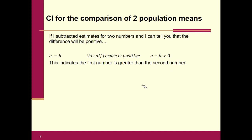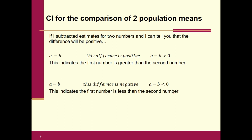If the difference A minus B turns out to be positive, that indicates the first number is greater than the second. Conversely, if the difference turns out to be negative — less than zero — that indicates that the first number A has to be less than the second number B. Nothing difficult about the math — these are simple concepts.